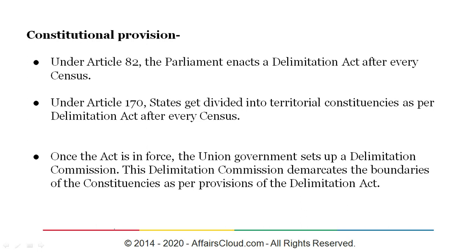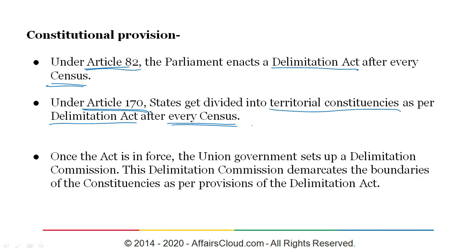Now let's look at the constitutional provisions of the delimitation commission and the delimitation act. Under Article 82 of the Indian constitution, parliament enacts a delimitation act after every national census. Under Article 170, the states get divided into territorial constituencies as per the delimitation act after every national census. Once the delimitation act is in force, the union government constitutes a delimitation commission, which demarcates the boundaries of constituencies as per the provisions of the Delimitation Act of 2002.